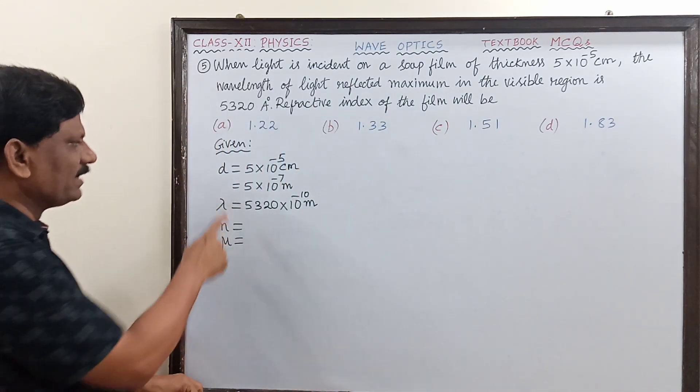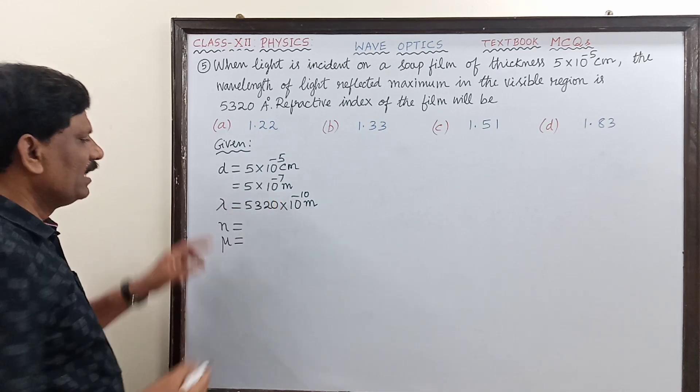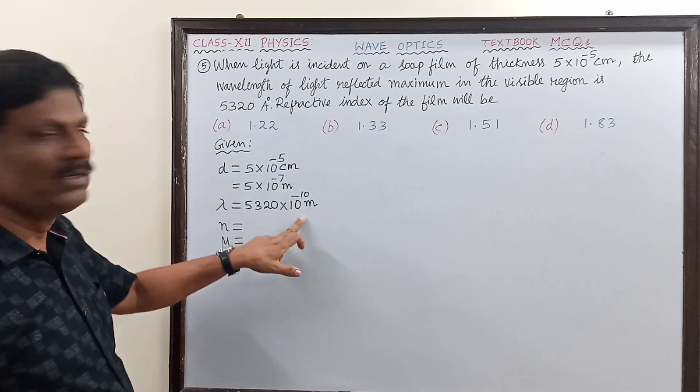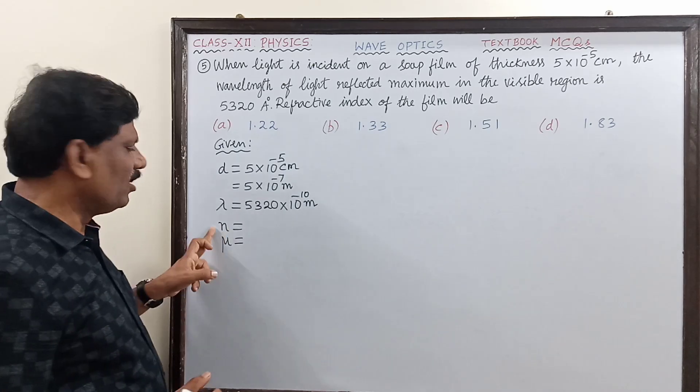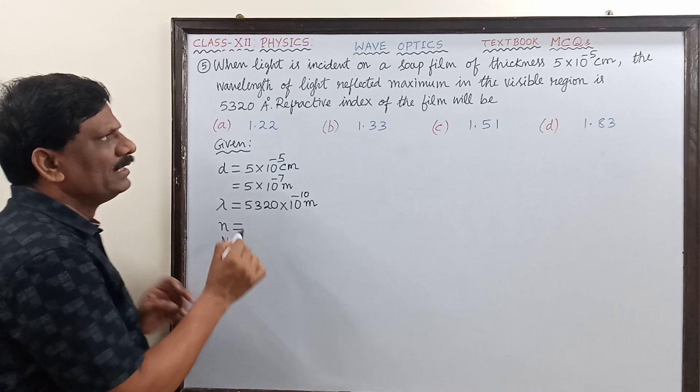Here, thickness of the film is given as d = 5×10⁻⁷ meter, wavelength λ = 5320×10⁻¹⁰ meter, and the order of reflection is n. They have given visible region of the spectrum.